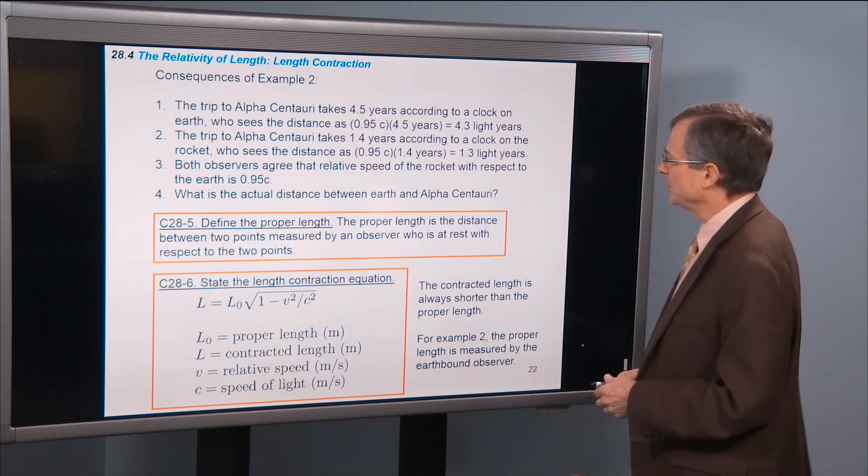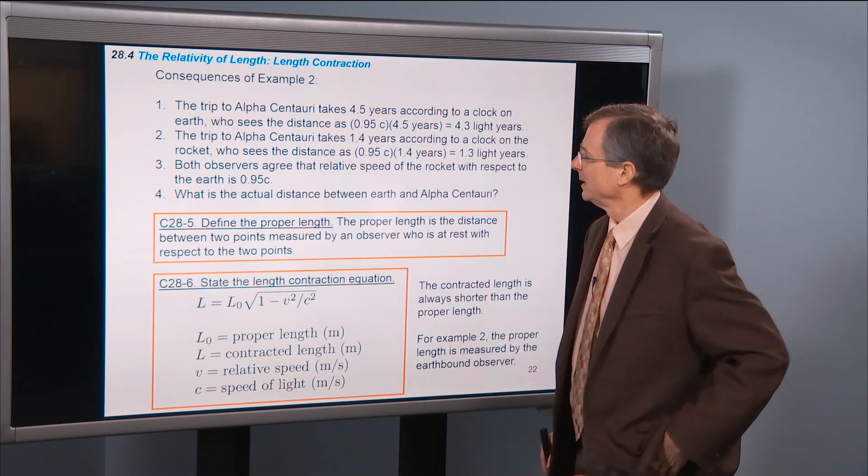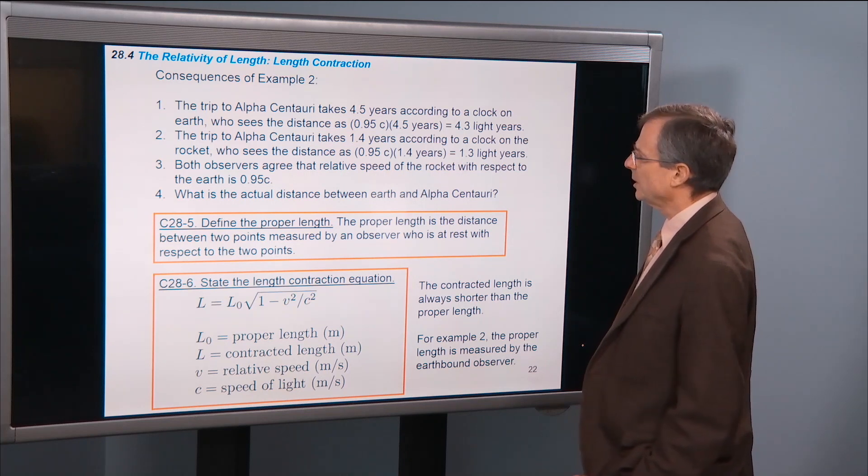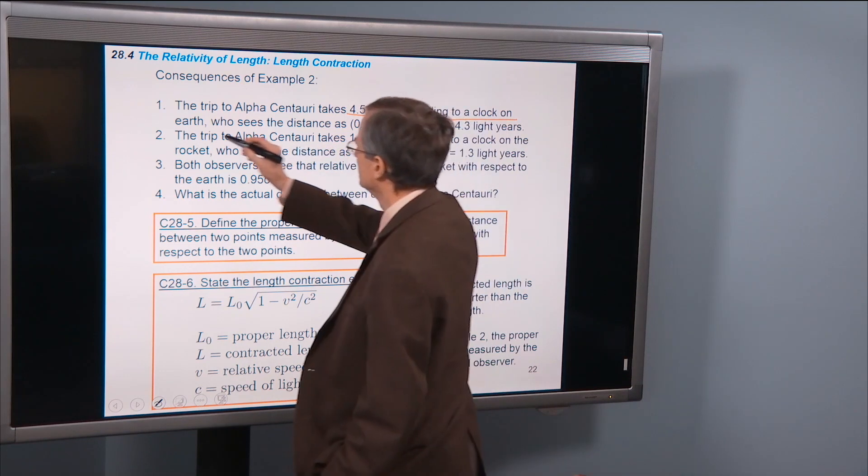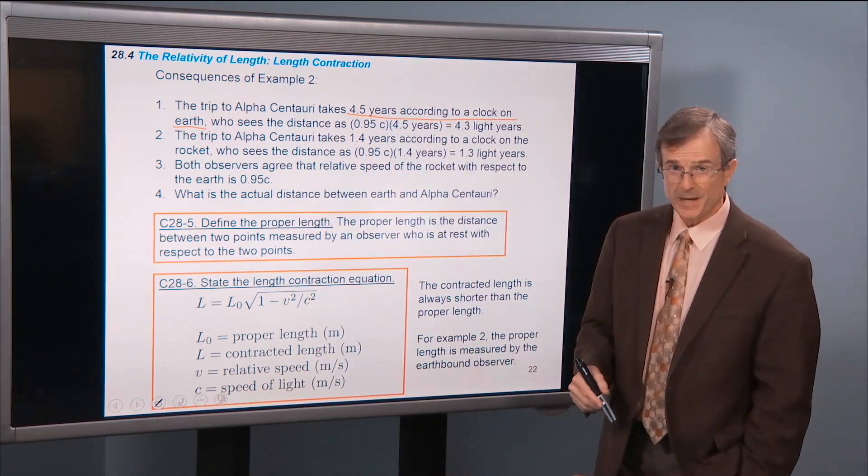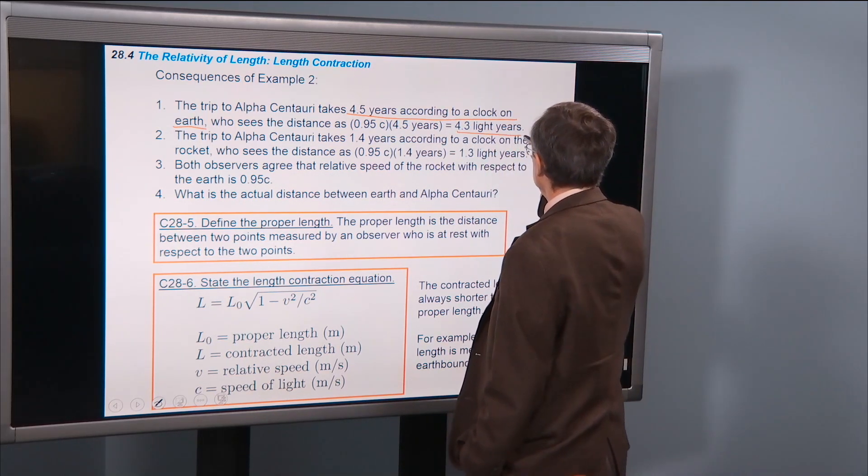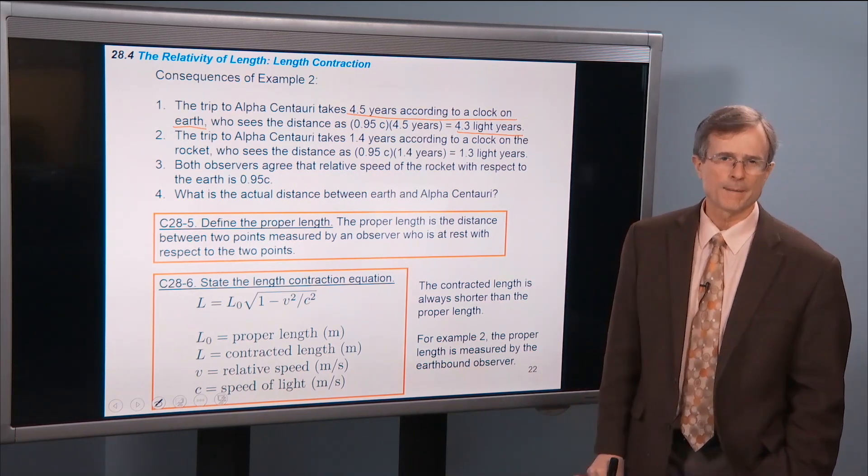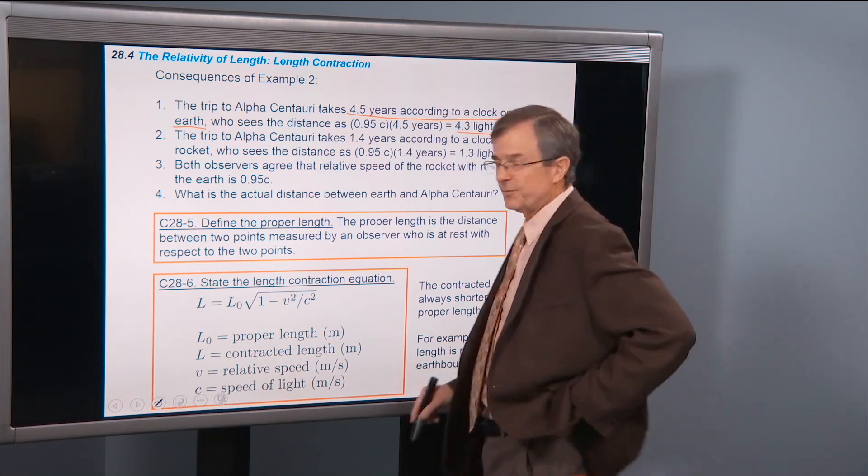So example two, this trip to that nearby star. The trip to Alpha Centauri takes four and a half years according to a clock on Earth. And that observer, the Earth-bound observer, sees the distance as 4.3 light years, the distance to the star.